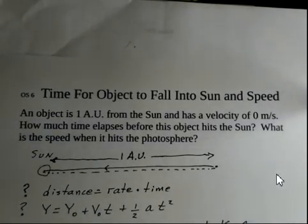In this example problem, we're going to calculate the time, approximate time at least, for an object to fall into the Sun when it's released from rest at a distance of one astronomical unit. So that's at the orbit of the Earth. And calculate the speed when this object would hit the photosphere of the Sun at least approximately.